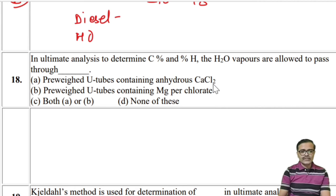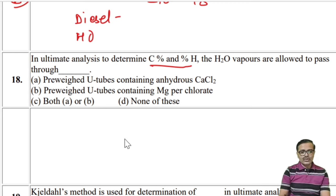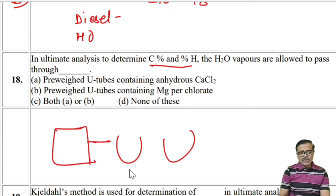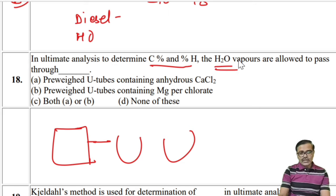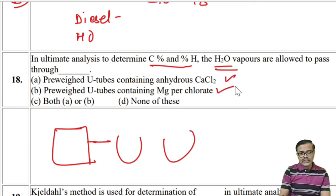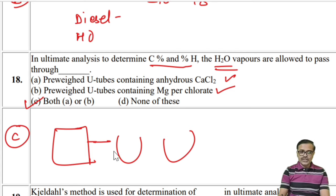In ultimate analysis for determining carbon and hydrogen concentration, the products pass through two U-shaped tubes. The first U-tube contains calcium chloride or magnesium perchlorate (absorbs water vapors), the second contains KOH (absorbs CO2). The question asks about water vapors — absorbed by the first U-tube containing calcium chloride or magnesium perchlorate — so both A and B are correct, making the answer C.